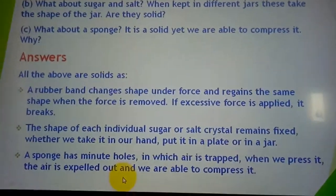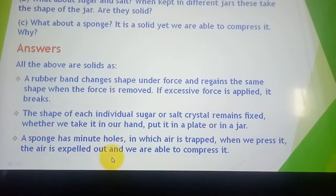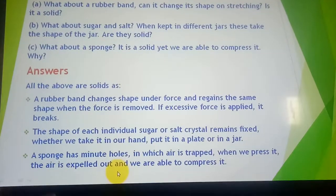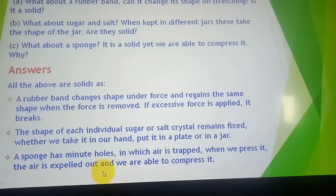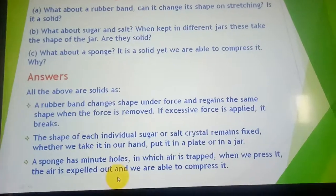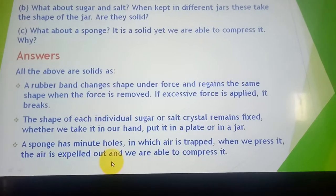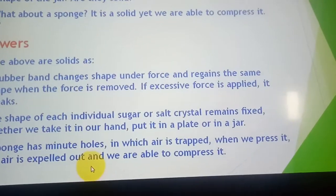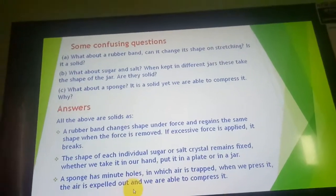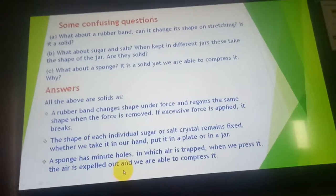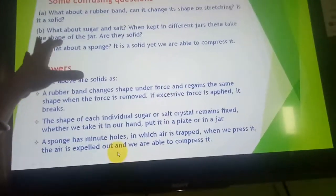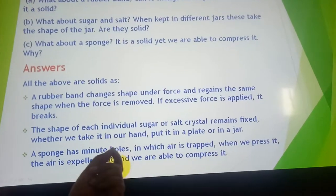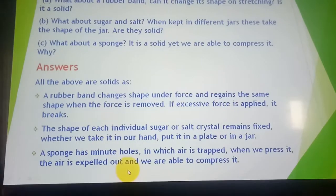Regarding sugar and salt: a single grain of sugar has a fixed shape. But when sugar or salt is poured as a whole into a jar, it takes the shape of that container. Each individual particle of sugar or a salt crystal has a fixed shape, but the bulk takes the shape of the jar. So yes, sugar and salt are solids — each individual particle has a fixed shape.